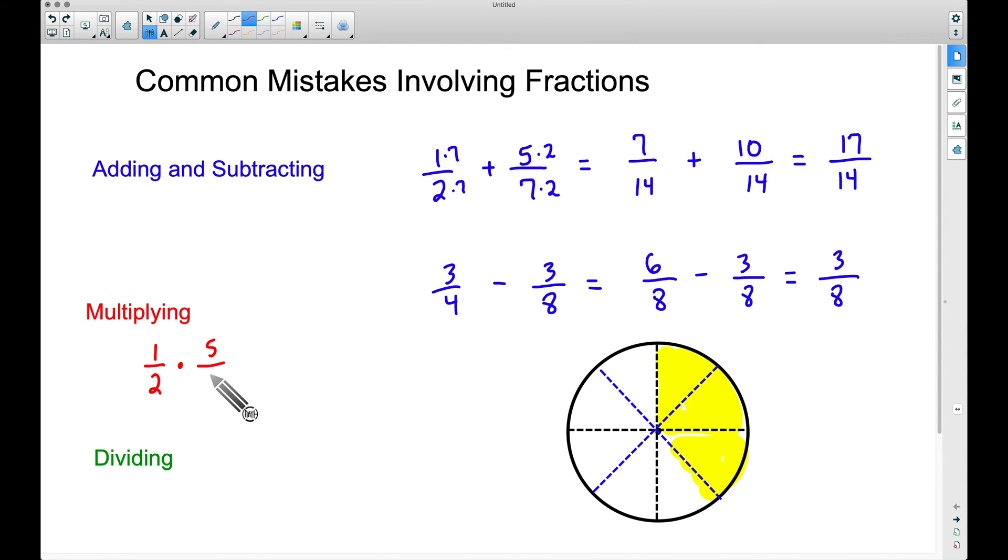1/2 times 5/7. Take the top times the top, you get 5. Take the bottom times the bottom, you get 14. 1/2 times 5/7 is 5/14. And that will not simplify so we are done with that problem.